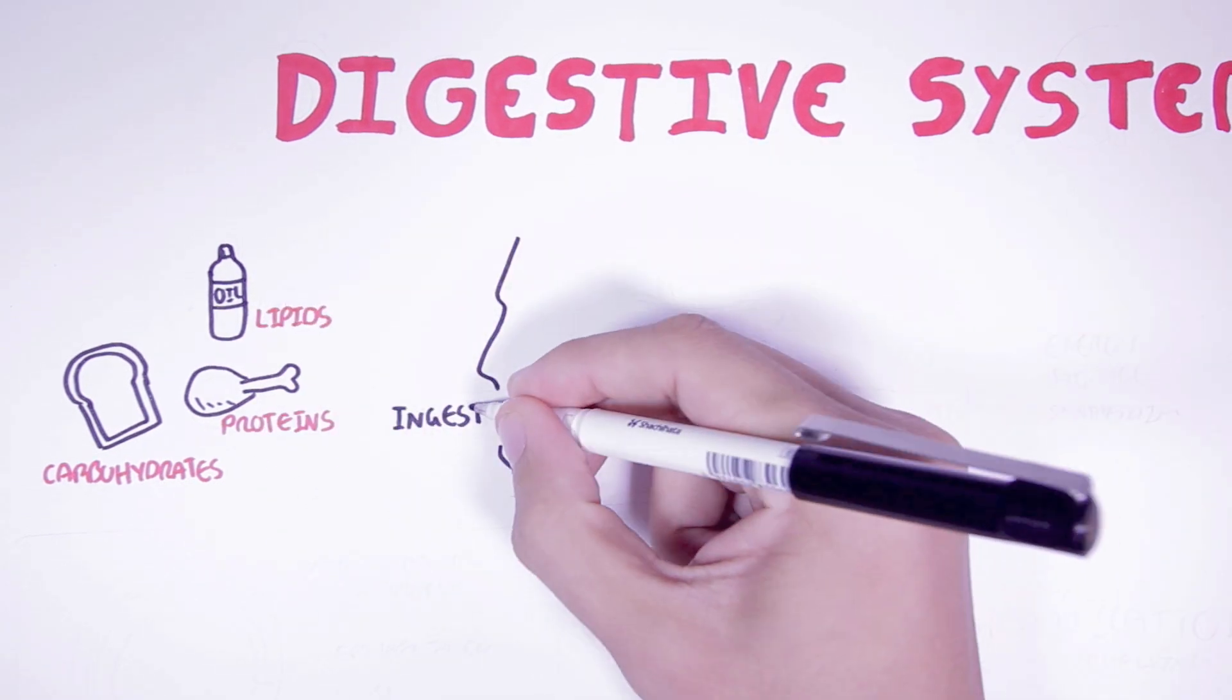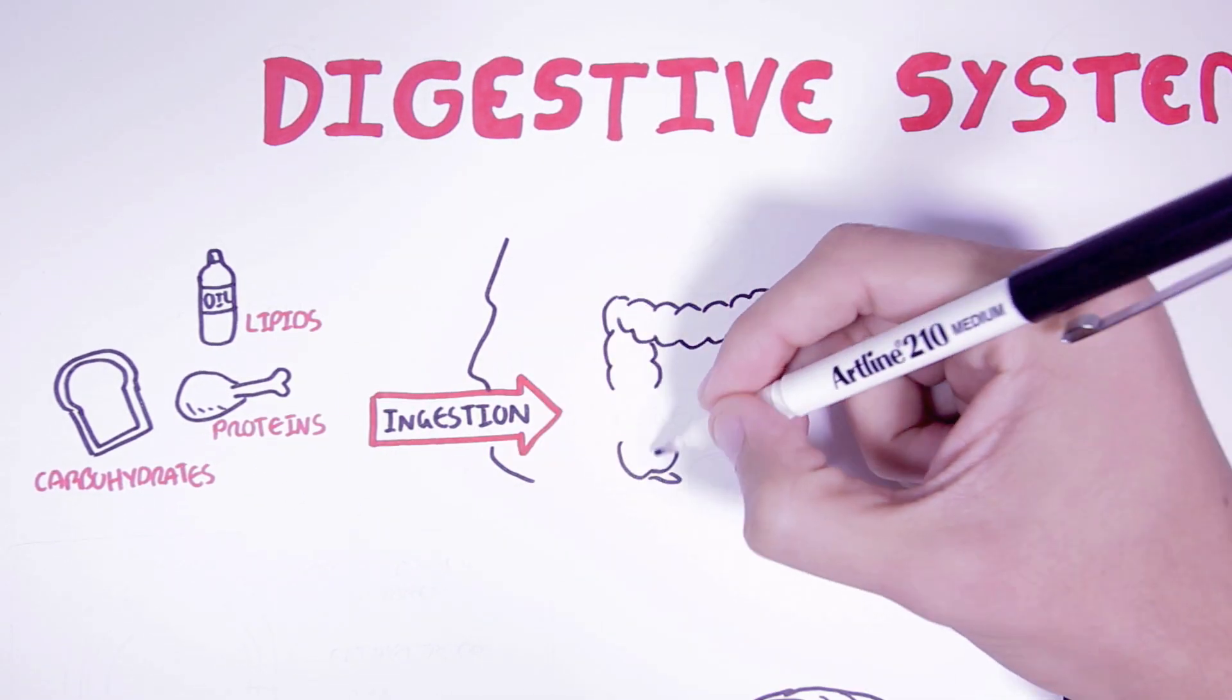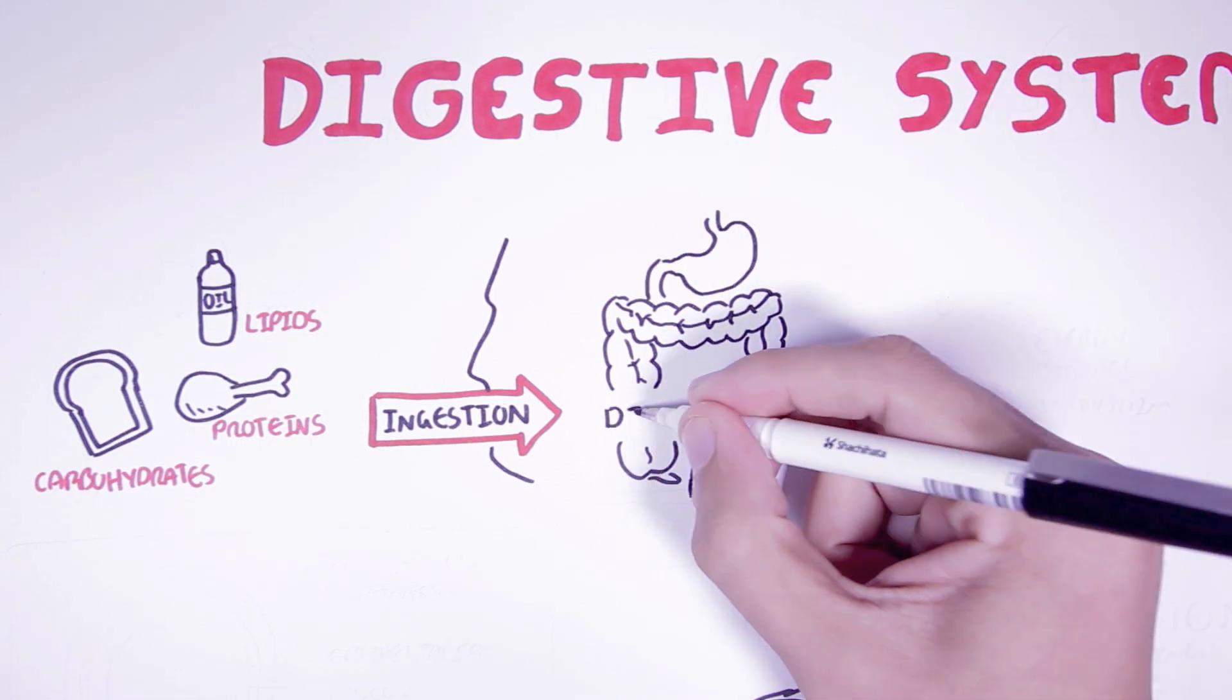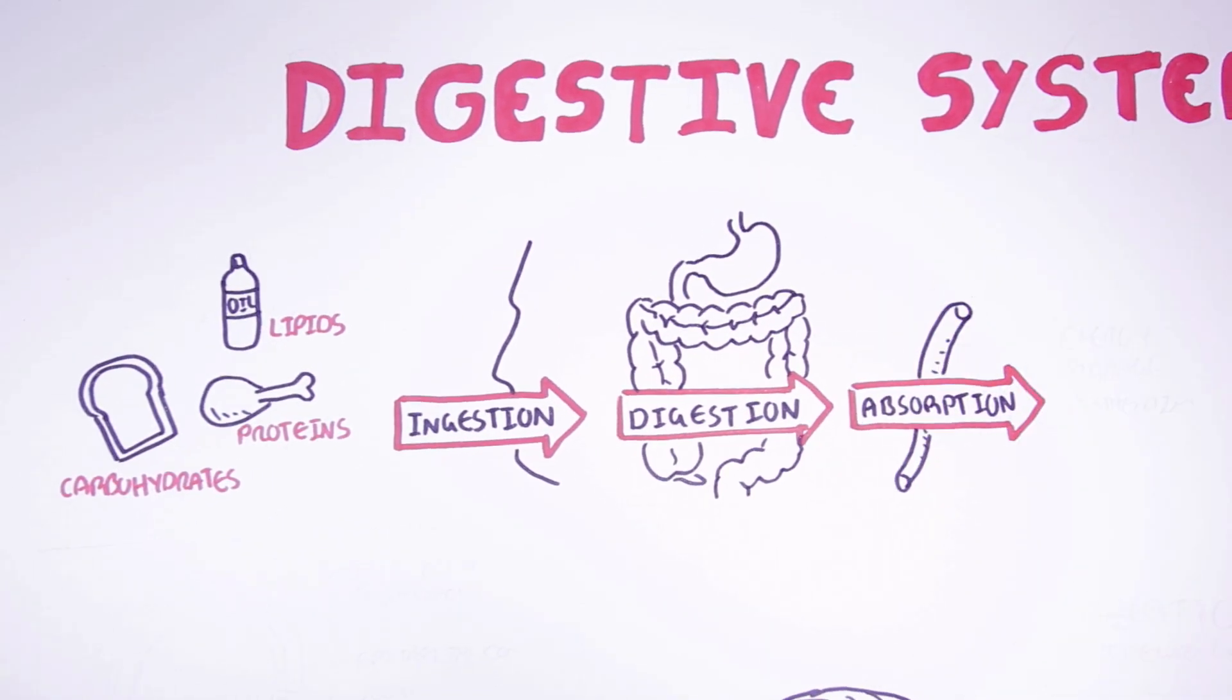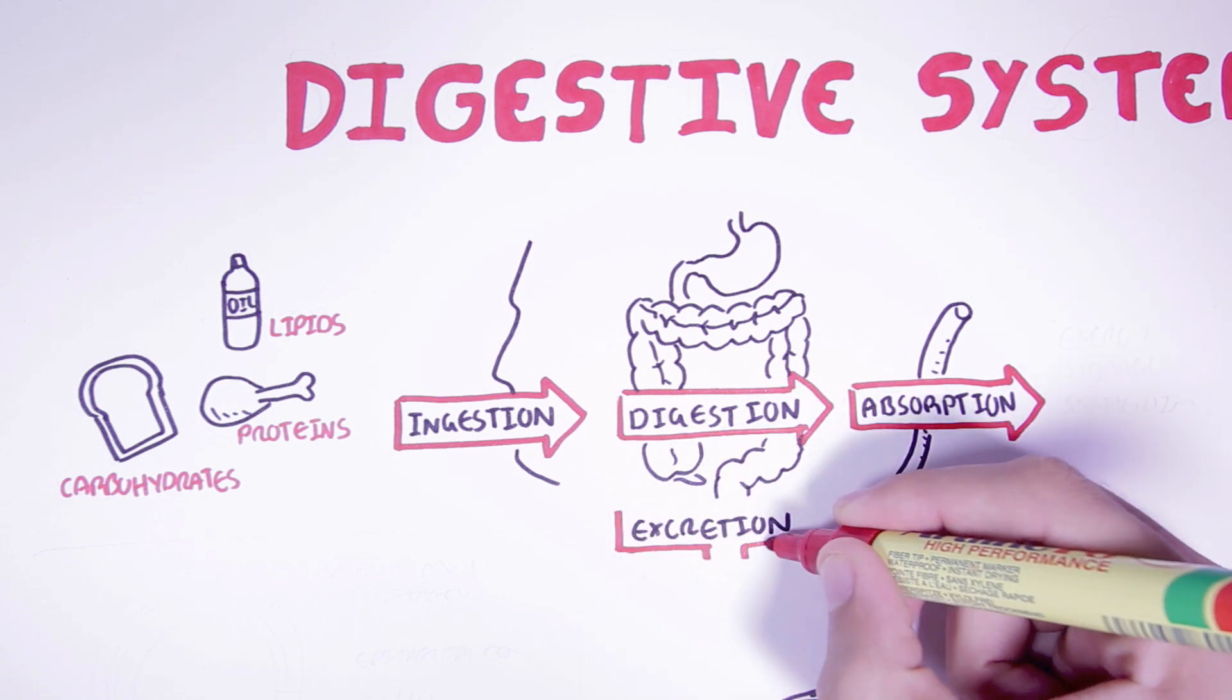These foods are ingested by the human. The food will be digested by the digestive system and then absorbed into the bloodstream, where it will be delivered to body tissues as energy or for storage. Finally, waste is excreted.